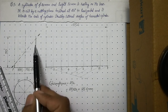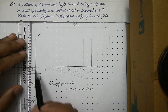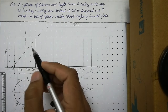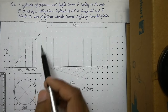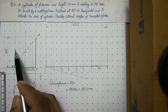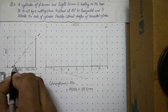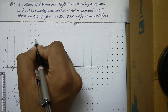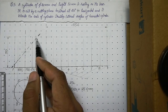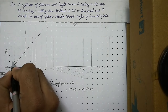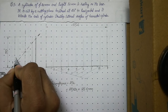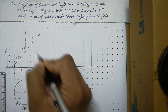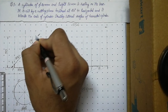The next step is to name the intersection points between the cutting plane and the generators. This is the first intersection — on generator 1, so call it 1. The next point is on generators 8 and 2, so label it 8(2). The next is on 7 and 3, so label it 7(3). Then 6(4), and finally 5.